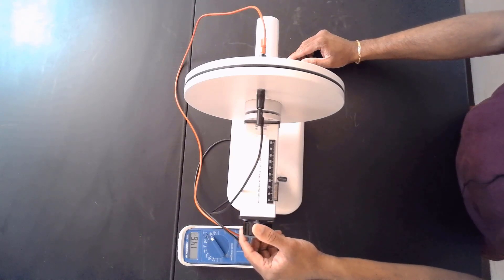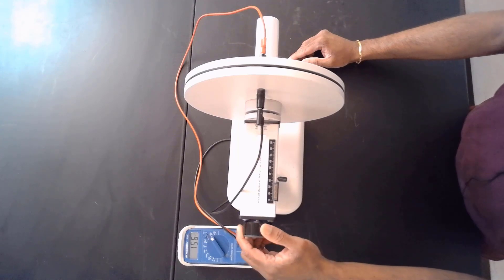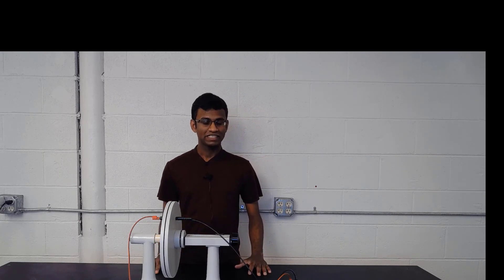If I go back, if I reduce the separation between the parallel plates, you will notice the capacitance is increasing. Alright, that's how you measure the capacitance. The ultimate goal of this experiment is to calculate the permittivity constant of air and comparing it with the theoretical value.